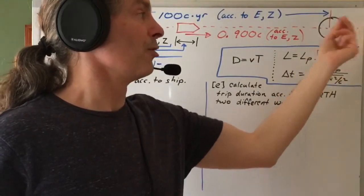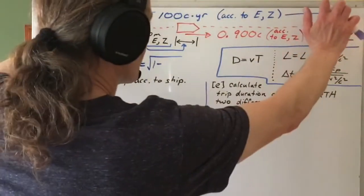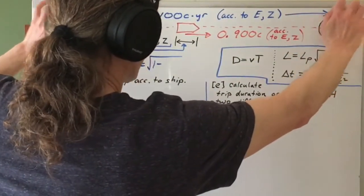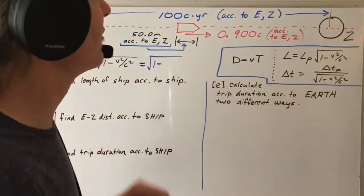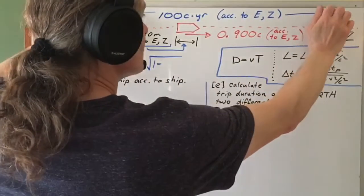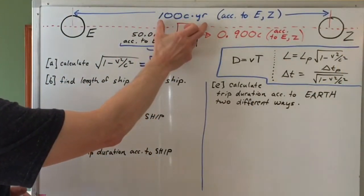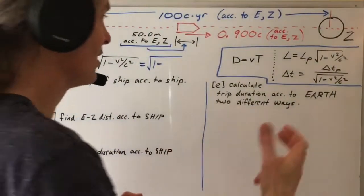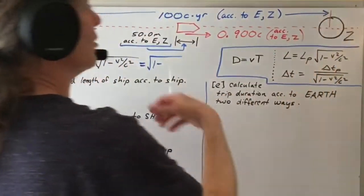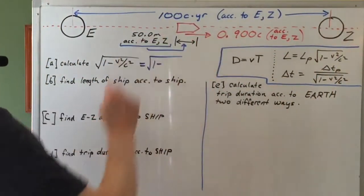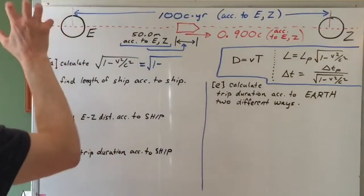You might ask: planet Z is orbiting around its host star, planet Earth is orbiting around the sun, and those host stars might be drifting apart or closer together. The relative drifting will be relatively tiny compared to this 100 light year distance, which is a cosmic scale distance. And the drifting speed will be slow compared to the speed in this problem.